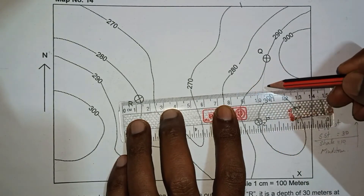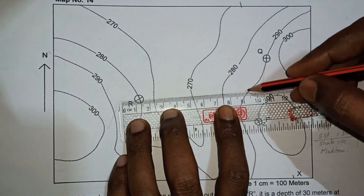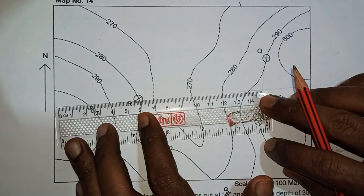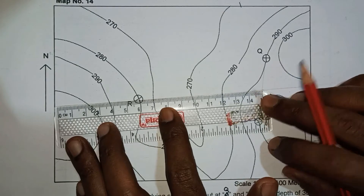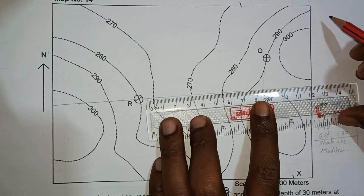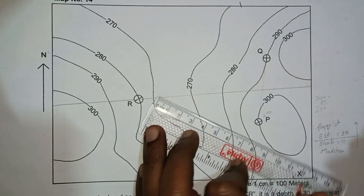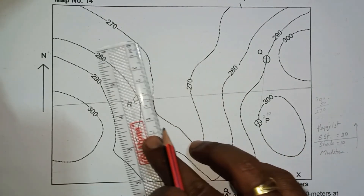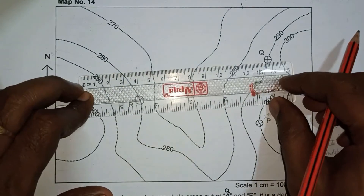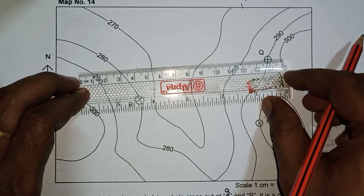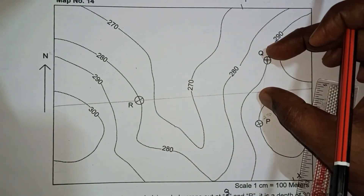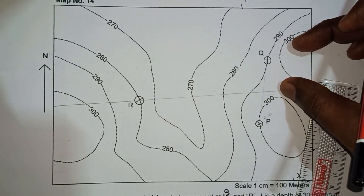Now connect R and that midpoint with a line. Then measure equal intervals and draw a perpendicular line. Connect these two points or draw a parallel line. Divide the entire map using this interval and draw the strike lines, or structural contour lines.